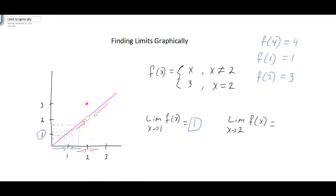We're concerned with what happens as we get extremely close to 2. As we get extremely close to 2 from the left and from the right, what's happening to our y value? If you said 2, you are correct. The limit here, as we get closer and closer to 2, our y value is still approaching 2, even though the function is defined to be equal to 3. We're only concerned with what happens as we get extremely close to that number.